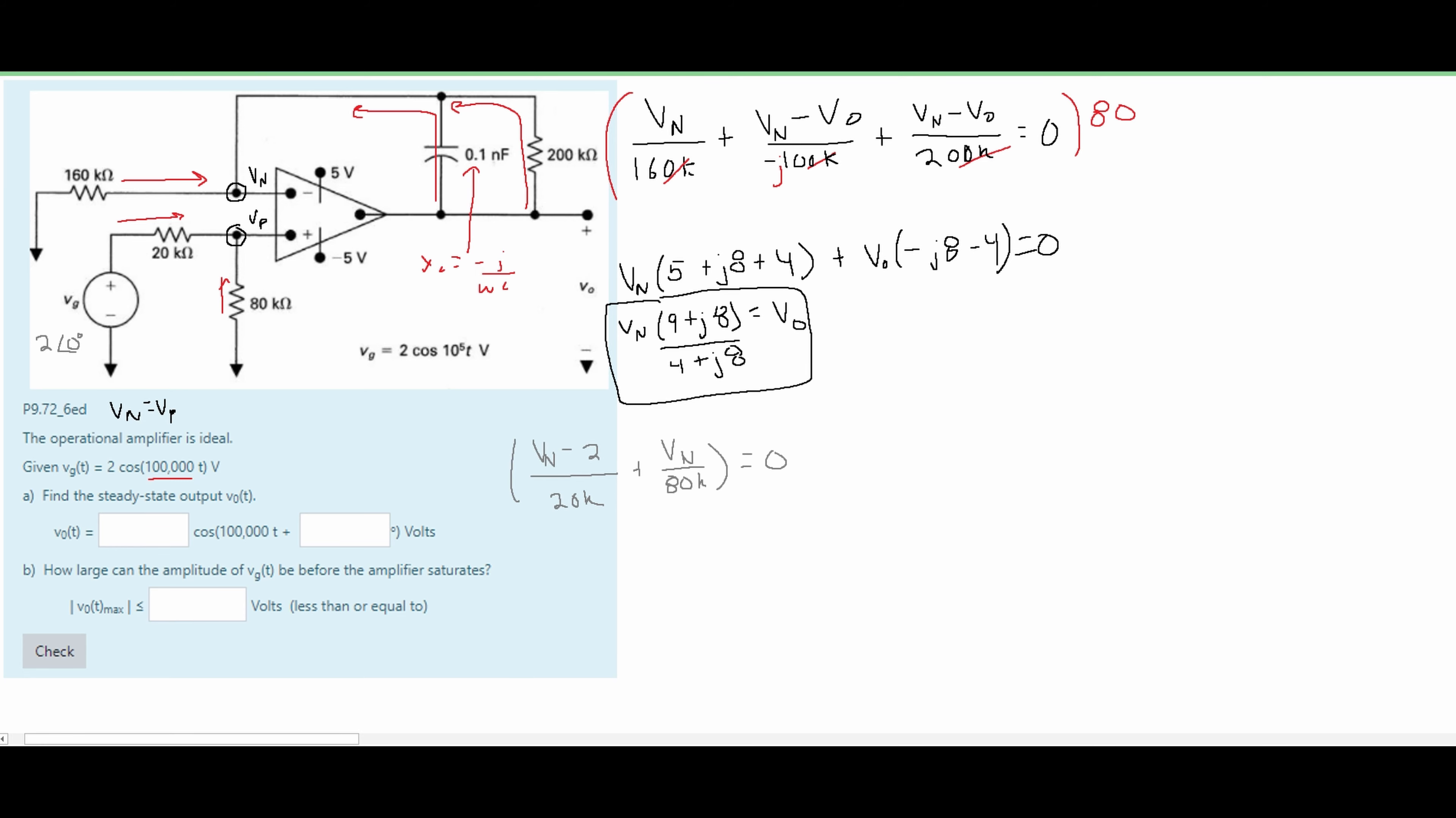This is set equal to 0 but to simplify this I'm going to multiply everything by 80K. And from this we're going to get that our VN is equivalent to 8 over 5. And that is what we're going to be plugging into our other equation.